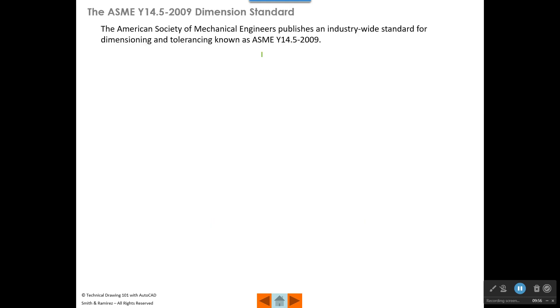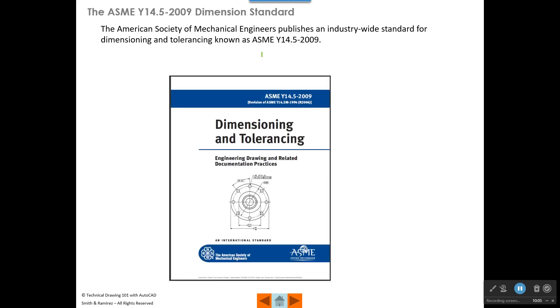The ASME Y14.5 dimension standard, as I said before, is the standard for dimensioning drawings in North America. And if you purchase the book, it looks something like this. If you go to the ASME website, you can log in. And if you have a credit card, you can download a digital version of this right away, or you can pay to have a book shipped to you. And so this standard offers guidelines for spacing, formatting, and placement of dimensions. And it's a very comprehensive and thorough look at dimensioning, including things like geometric dimensioning and tolerancing, which is a more complicated way to look at dimensioning. And it's usually reserved for more advanced classes or for more senior designers and engineers. But GD&T is also covered in the ASME Y14.5 standard.